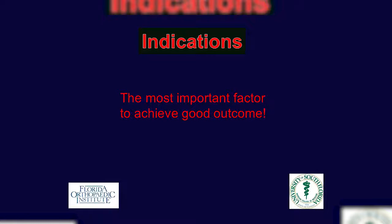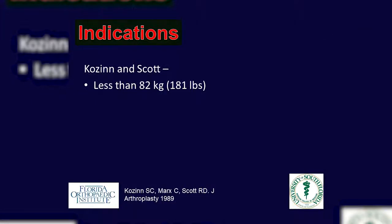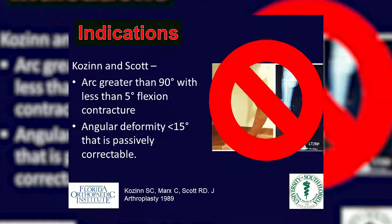Indications are by far the most important factor to achieve good outcomes. The Cozen and Scott criteria, initially published in 1989 and subsequently modified — I had the opportunity to work with Dr. Scott in fellowship. Indications include isolated medial or lateral compartment arthritis with a varus or valgus knee pattern, weight less than 82 kilograms or 180 pounds, arc of motion greater than 90 degrees with less than 5 degrees of contracture, and angular deformity less than 15 degrees that is passively correctable.